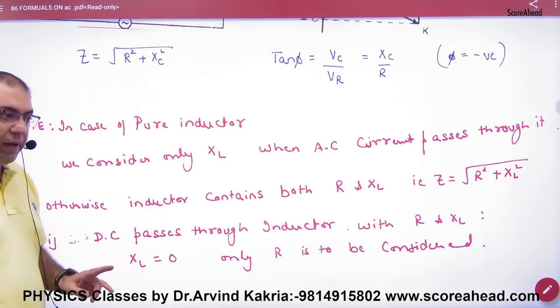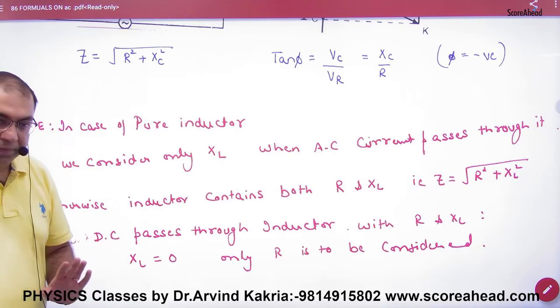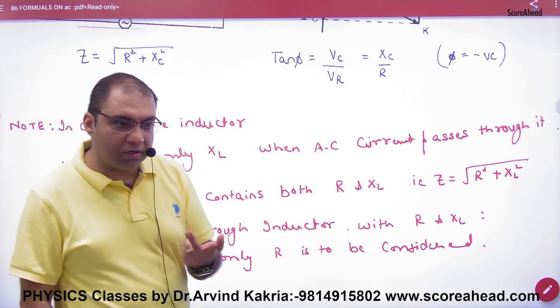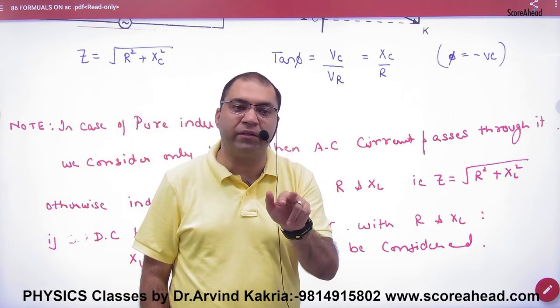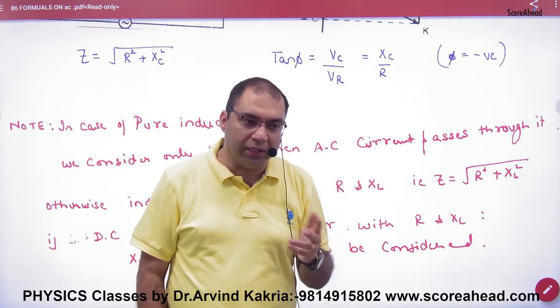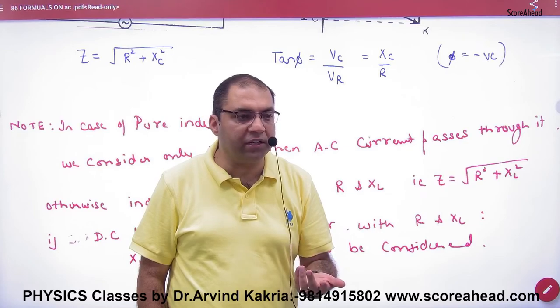So if a DC current will pass in the inductor, and think that it is not pure inductor. What is in a non-pure inductor? R and XL. So when DC current will pass in this inductor, then for DC, XL is zero. DC current when we pass in it, then XL doesn't have a role. So what will remain? R remains.